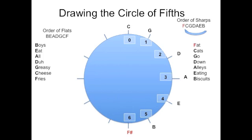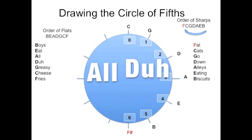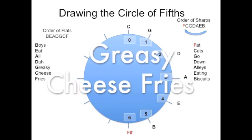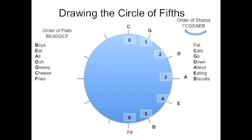Alright. Well, just like we handled the right-hand side of the circle first with some letters in the upper right-hand corner, we're going to go to the upper left-hand corner of the left side of this diagram. And you'll notice some letters there. B-E-A-D-G-C-F. Those letters are exactly opposite from the letters you saw on the right-hand side. F-C-G-D-A-E-B. So, instead of having fat cats going down alleys eating biscuits, we now have boys eating all the greasy cheese fries. I tried to find some pictures of boys eating cheese fries. It just got pretty disgusting. Just know that boys eat all the greasy cheese fries. B-E-A-D-G-C-F. That little string of letters is going to give our clue for us to finish out this diagram on the left-hand side.